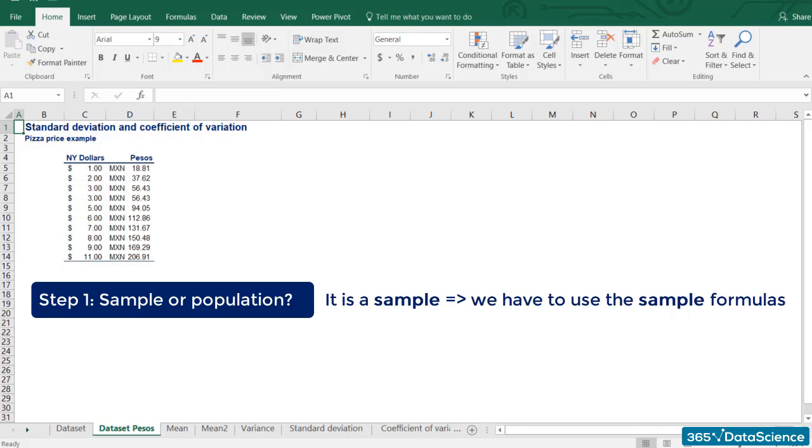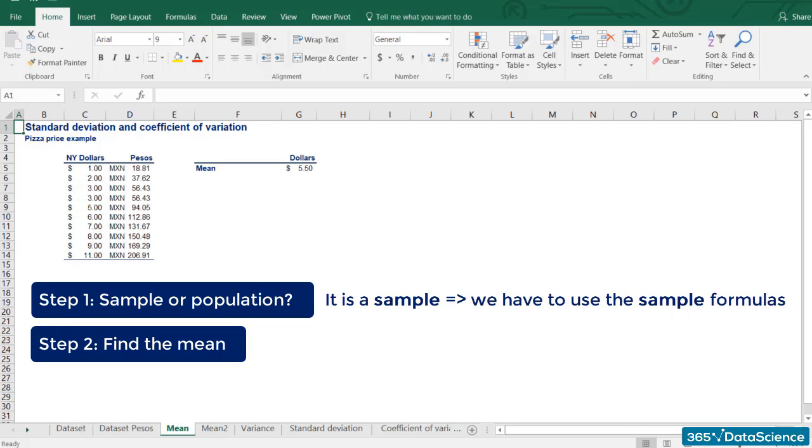Second, we have to find the mean. The mean in dollars is equal to 5.5 and the mean in pesos to 103.46.